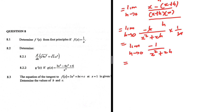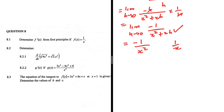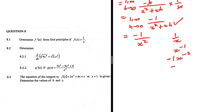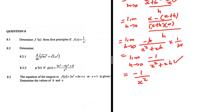Let's let h tend to 0. If we do that, we are left with minus 1 divided by x squared. This is f prime of x using first principles. We can test it using the power rule: write 1 over x as x to the minus 1, and when we differentiate we get minus 1 times x to the minus 2, which is minus 1 divided by x squared. So we are quite convinced that what we did using first principles is correct because we get the same answer using the power rule.